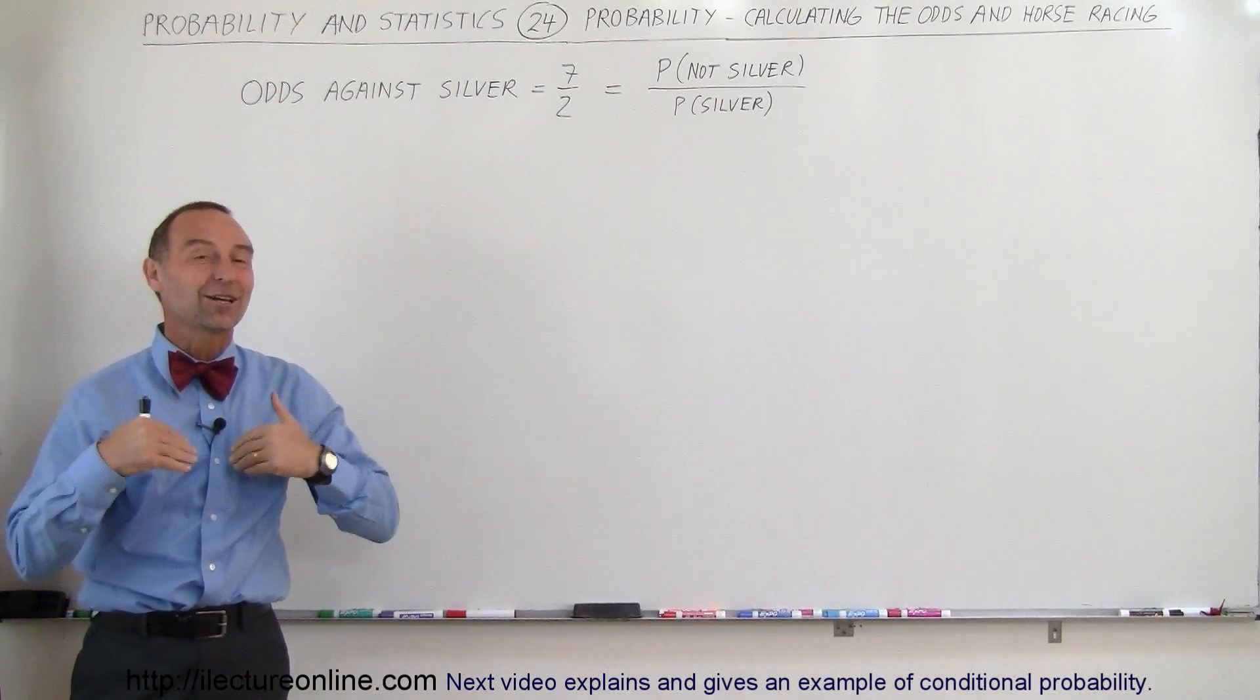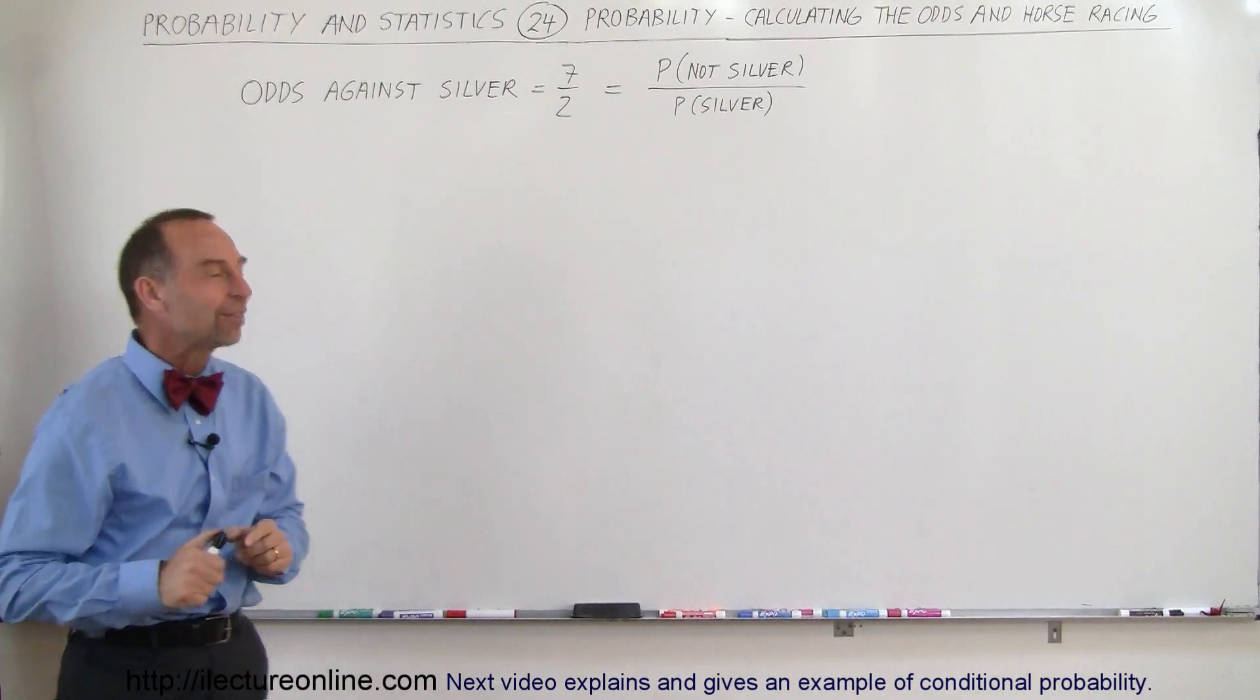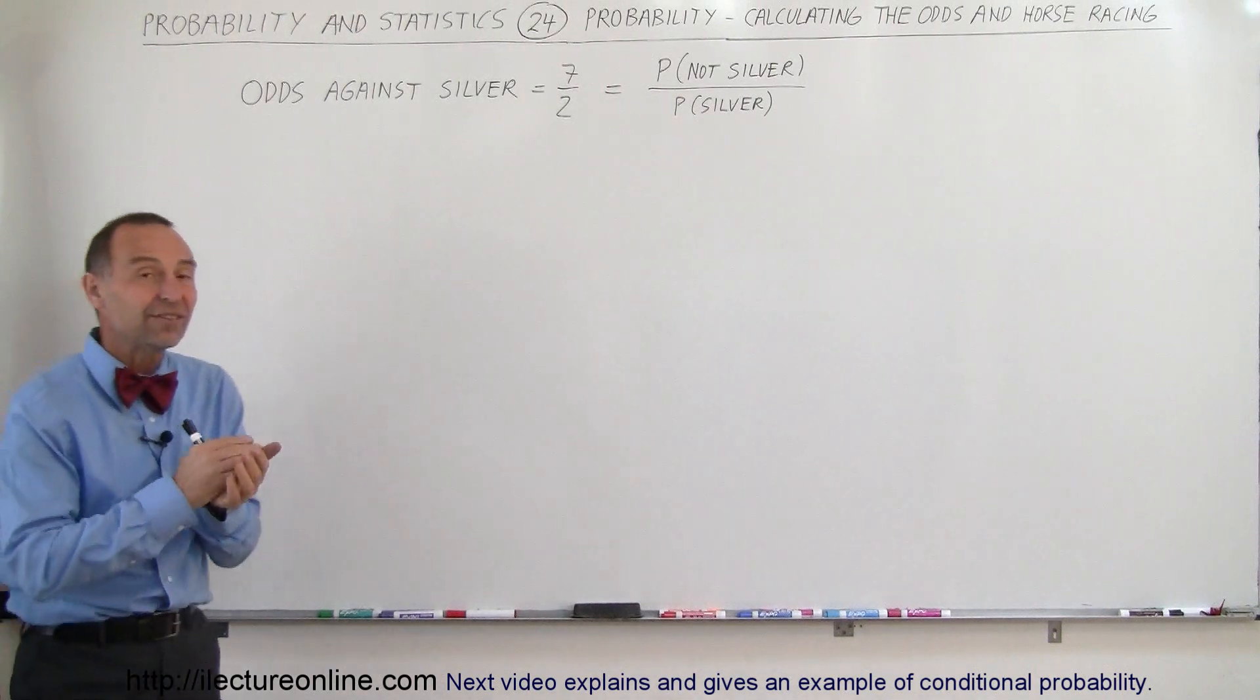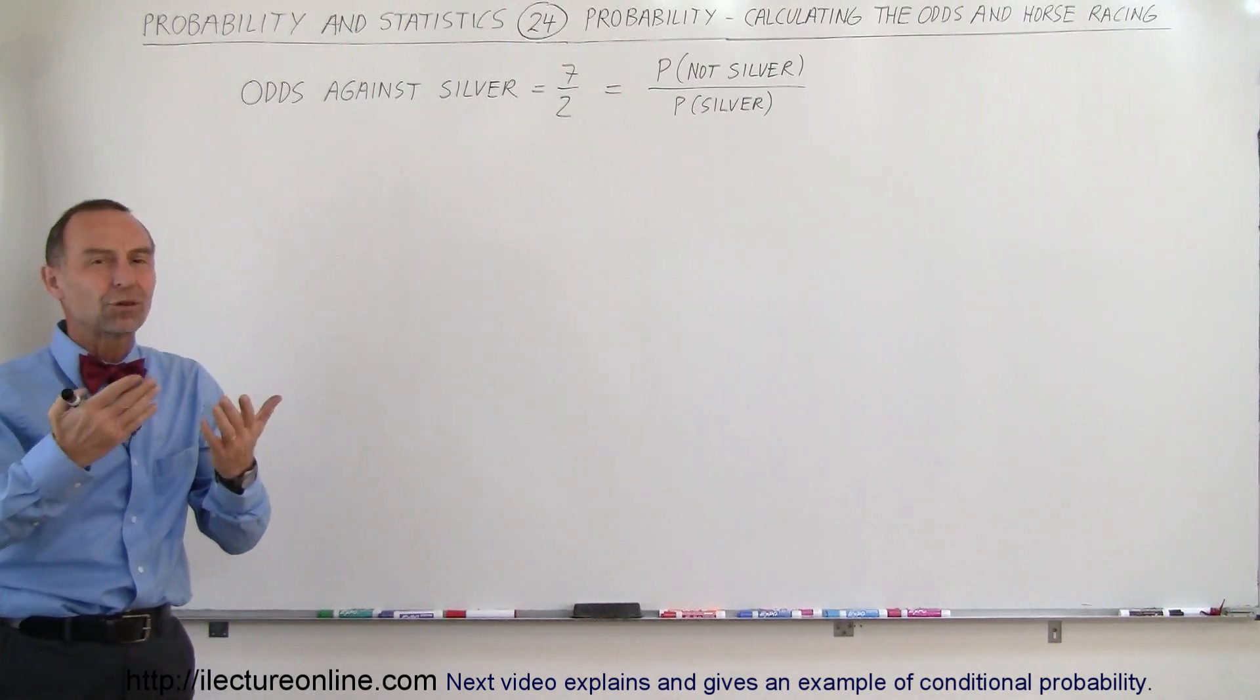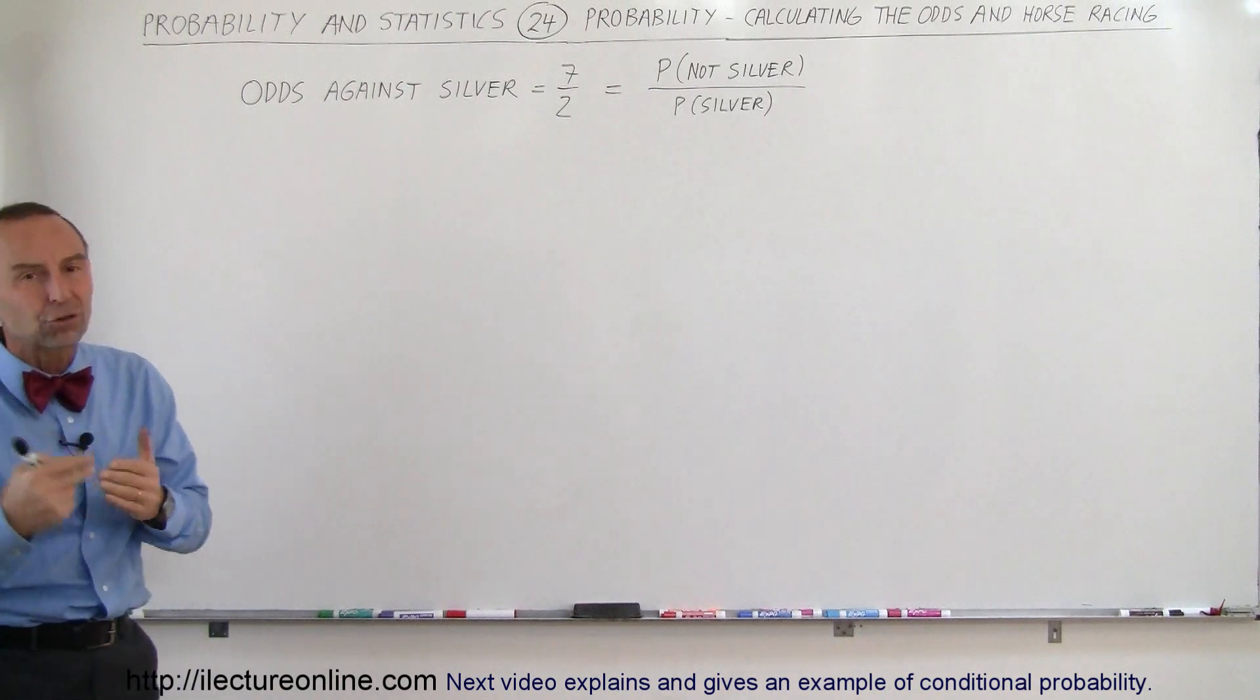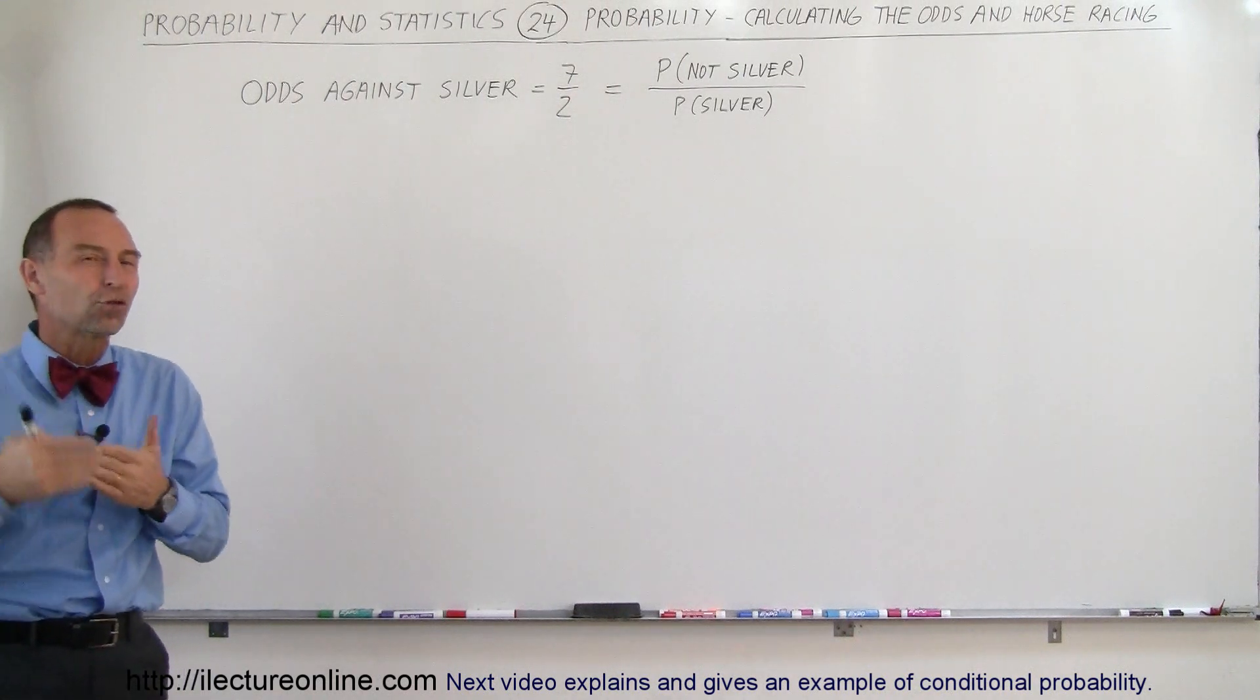Welcome to Electron Online and now let's start talking about the odds and horse racing. So typically what they do is they have the odds against or the odds for a horse. Typically it's the odds against a horse, that means the odds against a horse winning.